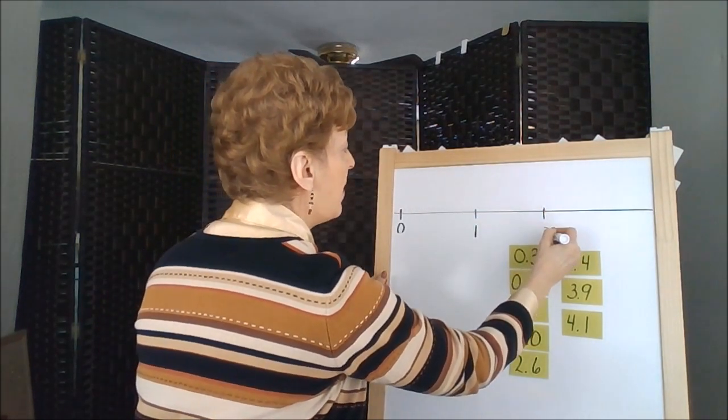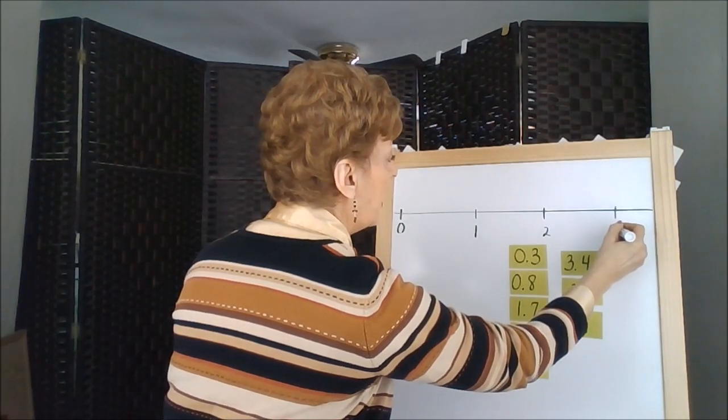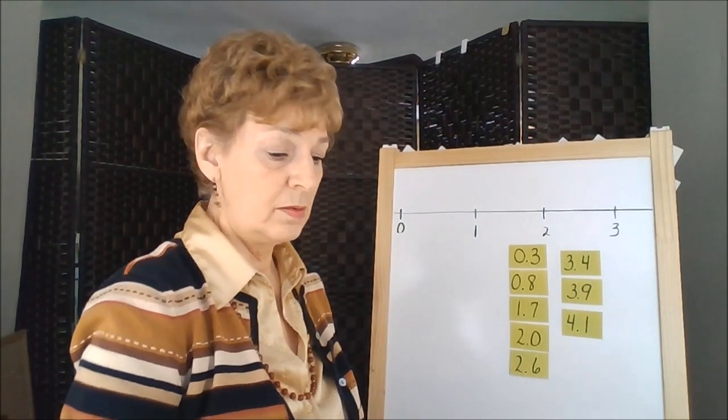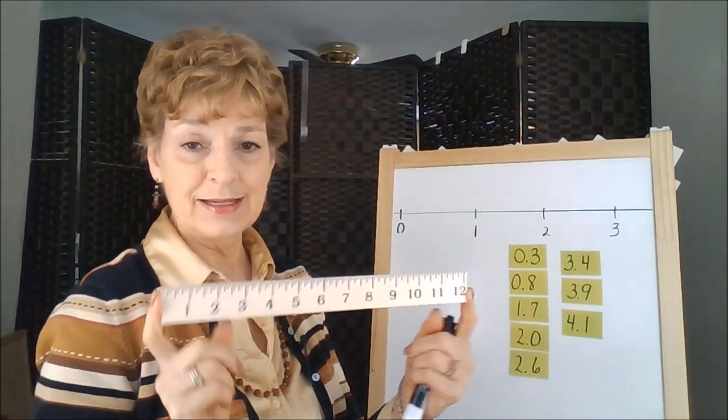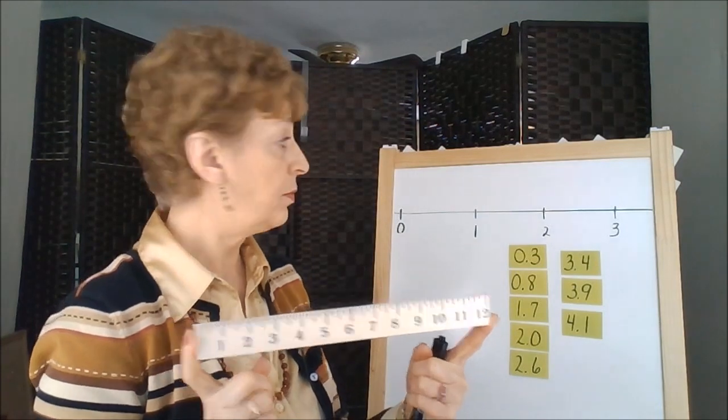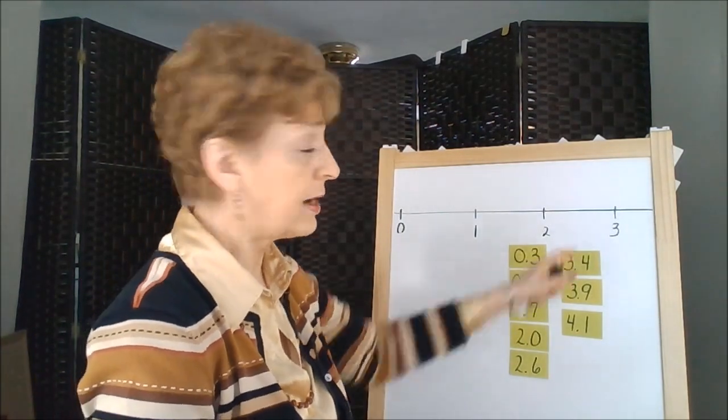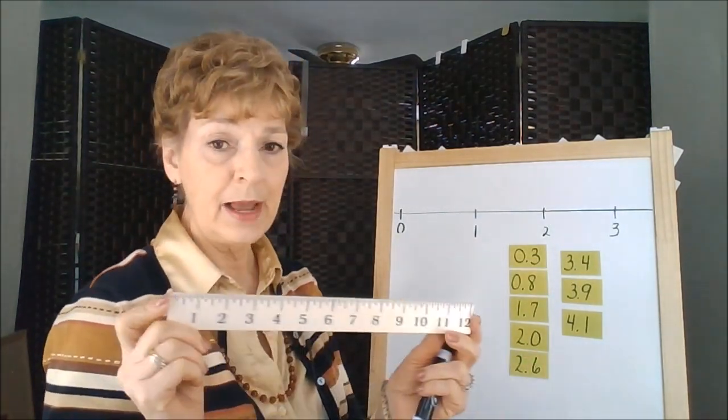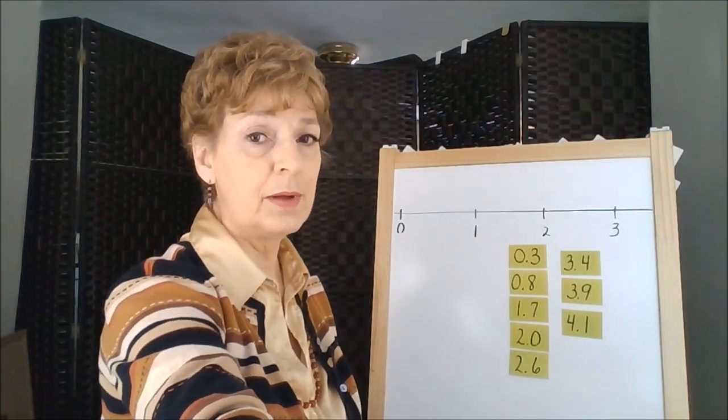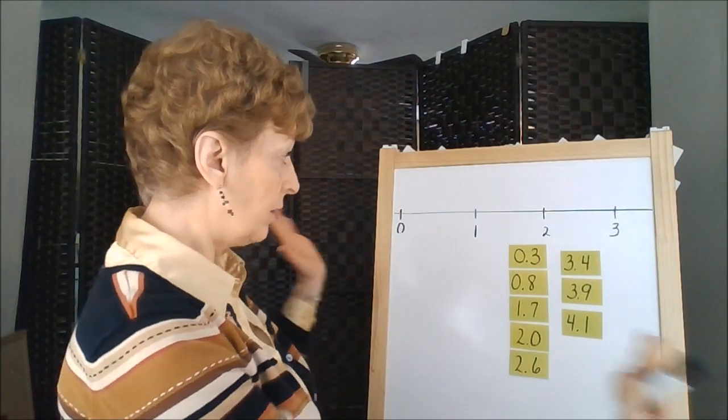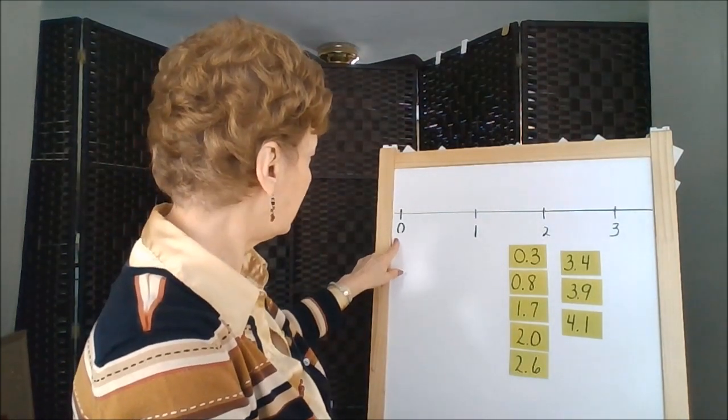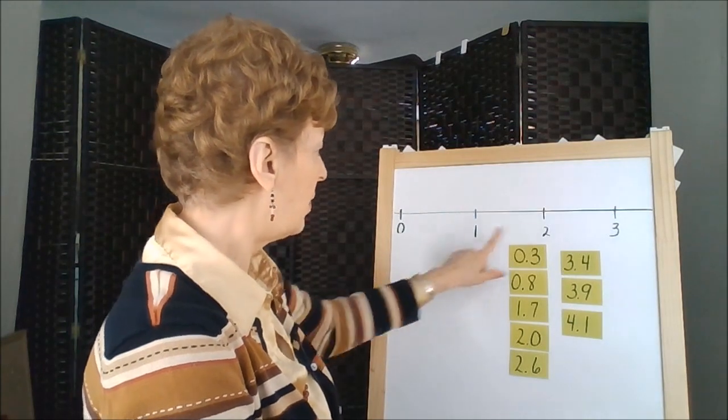This reminds you of a ruler, I hope. Rulers have those designations on them. We're really reading a ruler here with this exercise of a number line. This happens to be a ruler in standard measurement. If you were to get a meter stick or a meter ruler, a centimeter ruler, you would have these delineations where you'd have a zero, one, two, and three.